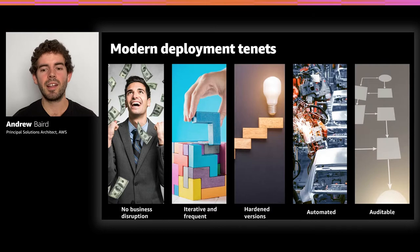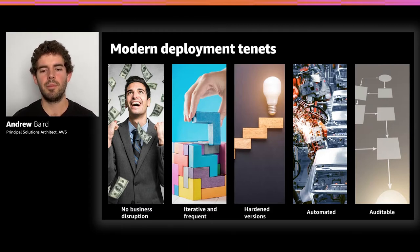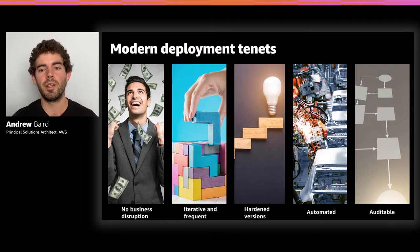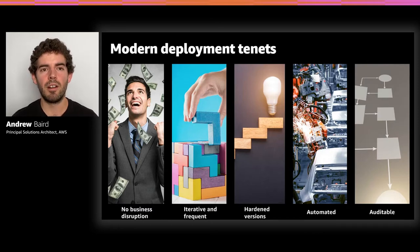Next, making sure deployments are iterative and frequent. The more you reduce risk by making changes smaller, the narrower the scope of investigation for possible bugs. By making deployments iterative, you can make them more frequent — smaller batches, quicker development cycles resulting in deployment to production. That means you can deliver features for your business partners and product managers faster. Striving to be iterative and frequent is important, and one thing that enables that is having really hardened versions.